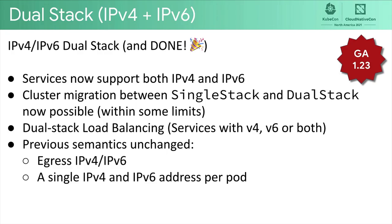We are happy to announce that the wait is over — IPv4/IPv6 dual stack is going to be GA in 1.23. This means that services and pods now support both IPv4 and IPv6 in either single or dual stack modes. There are specific APIs designed around migration of existing services between single stack and dual stack within some reasonable limits. Dual stack is also possible with load balancing and services, supporting any combination of the stacks. Previous IPv6 semantics remain unchanged, including egress policy behavior and having a single IPv4 or IPv6 address per pod — there are no multiple IPs for pods within the same family.